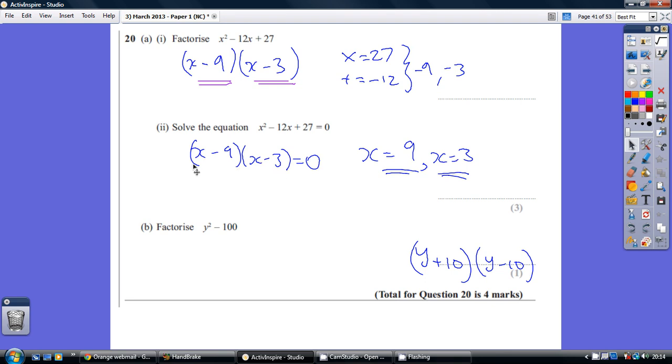Well, for this first bracket, how do we make this 0? Well, x would be 9. How do we make the second bracket 0? Well, x would be 3. So there are two solutions. So basically, in short, we're just our two magic numbers with the sign reversed.